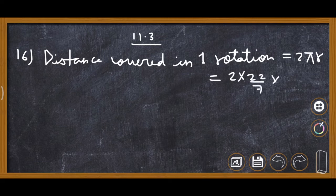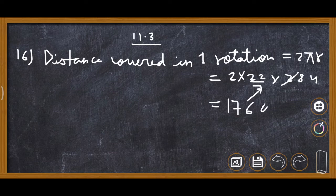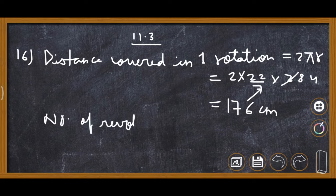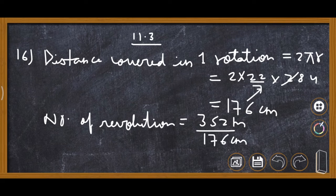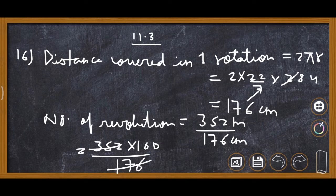Using pi as 22 upon 7 and radius as 28: 2 into 22 into 4 gives 176 centimeter per rotation. Now the total number of revolutions equals 352 meter divided by 176 centimeter. Simplifying, this gives 200 revolutions.